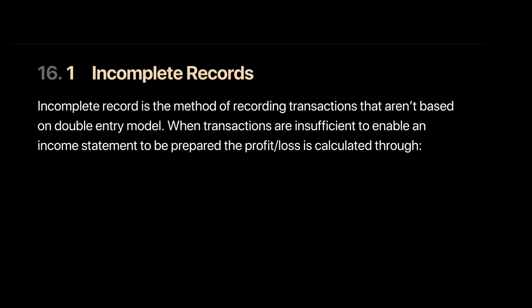For such businesses with incomplete records, which is the method of recording transactions not based on the double entry model, we will have to use the available transactions to prepare an income statement to calculate the profit or loss and also draw the statement of financial position. We will use the given data to calculate all the missing items such as sales, purchases, etc.